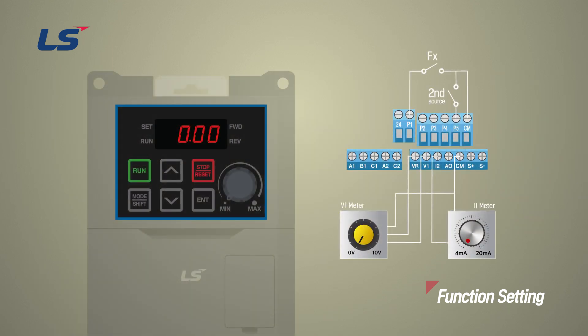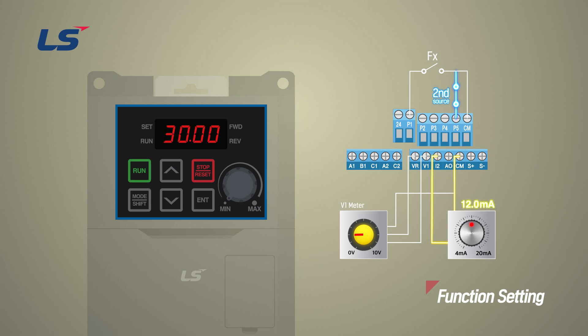When the switch of P5 terminal is in the OFF state, it operates in the original operation state which we set in DRV and FRQ. The frequency is displayed according to the voltage setting because the operation command in the original operation state is set to the terminal block and the frequency command is set to 0 to 10 volts. Since it is set as a voltage command, the frequency according to the voltage setting is displayed. If the switch of P5 terminal is changed to ON state, it operates in the second operation state.